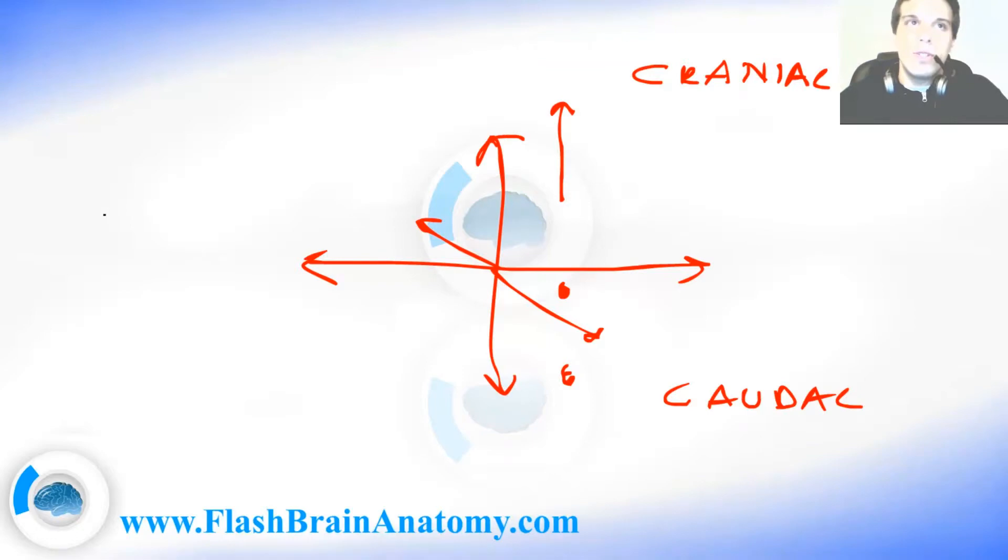We also have sinister and dexter. Sinister means left and dexter means right. We have the dorsal and we have the ventral. So, ventral, dorsal, cranial, caudal, dexter, sinister.